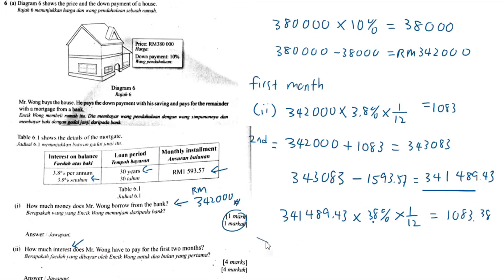So for first two months, it will be 1083 plus 1083.38. And you will get the answer of RM 2164.38.